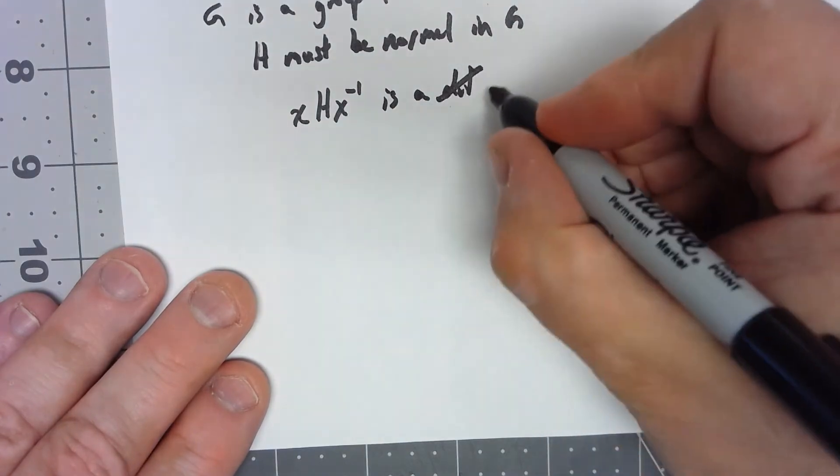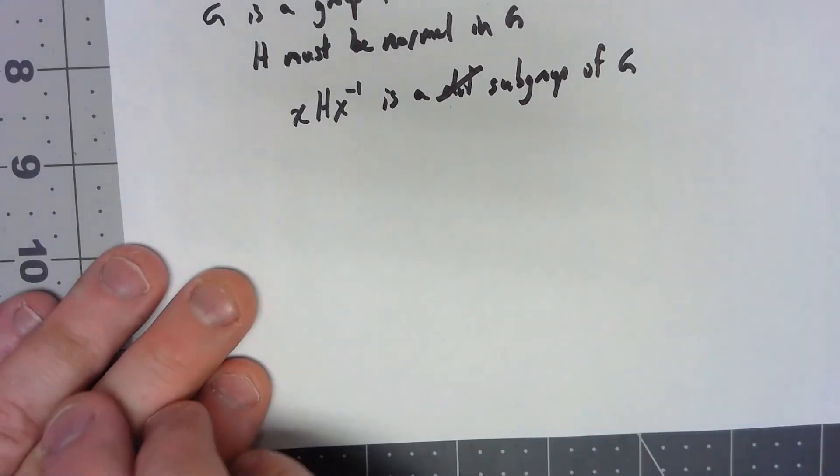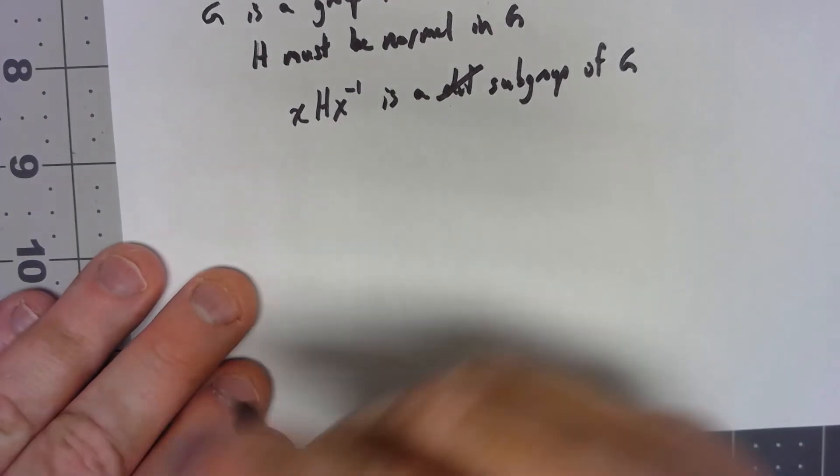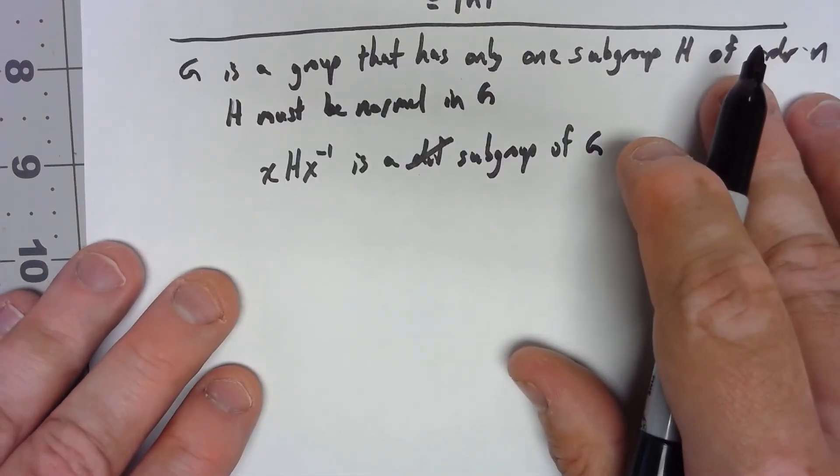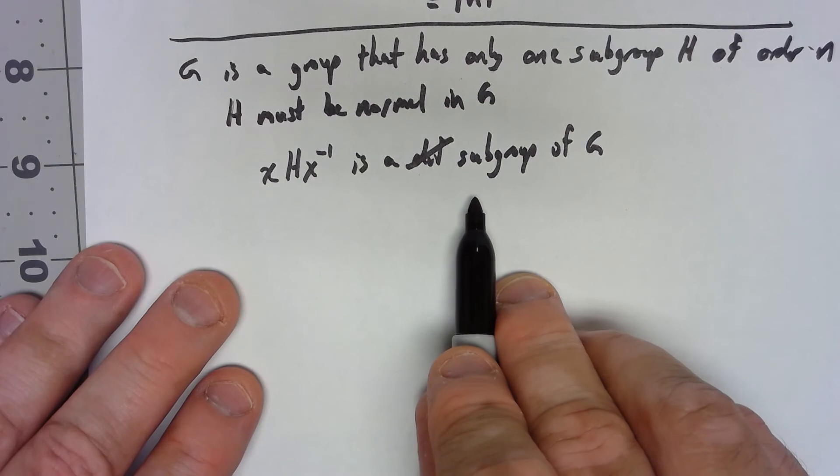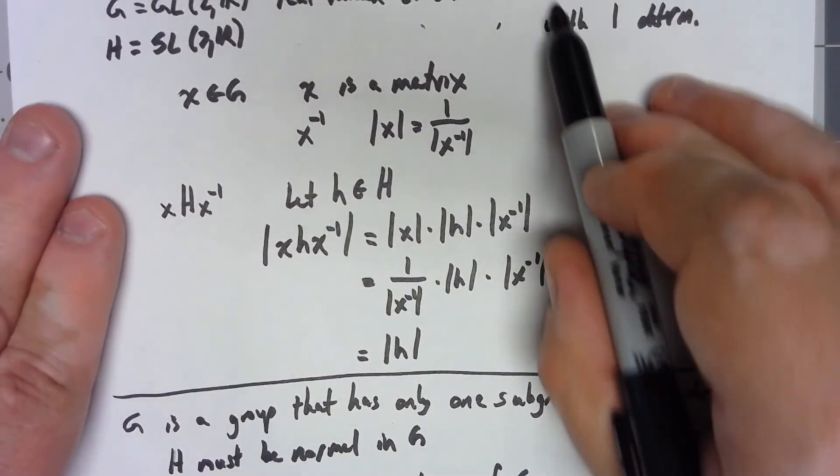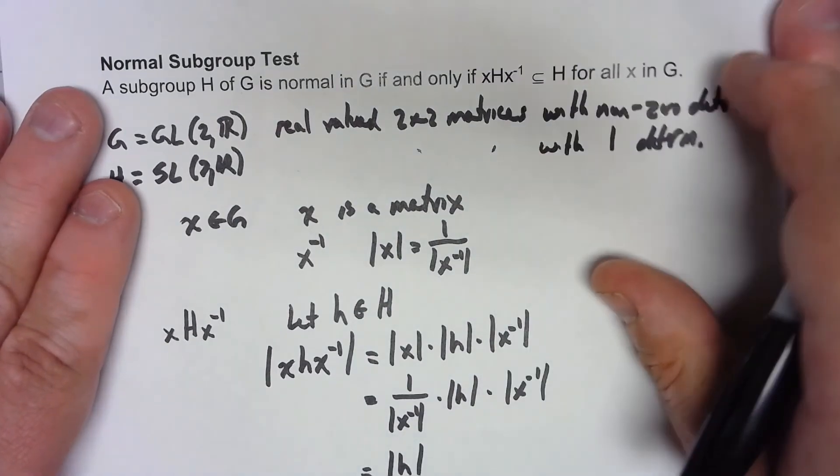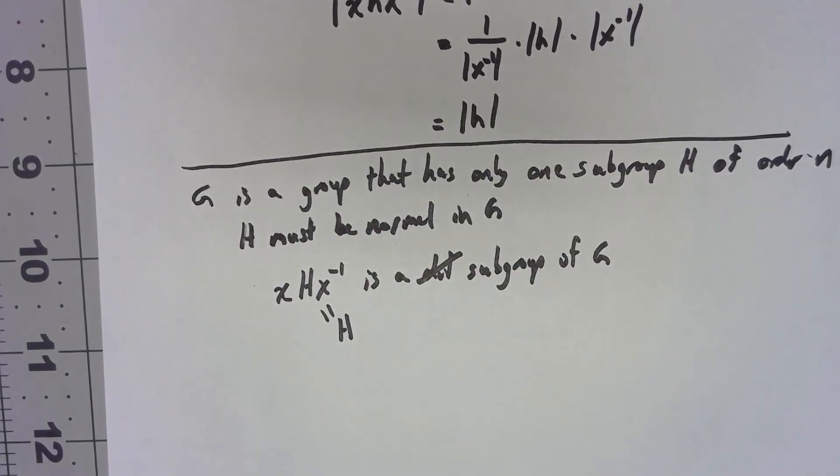Well, I won't say different, is a subgroup of G. For any X, when I do that conjugation thing, I get a subgroup of G. But the number of elements in XHX inverse is the same as the number of elements in H. So that means that this is a subgroup of order n, this has to equal H. Well, certainly if it's equal to H, then it's a subset of H, therefore it's normal.